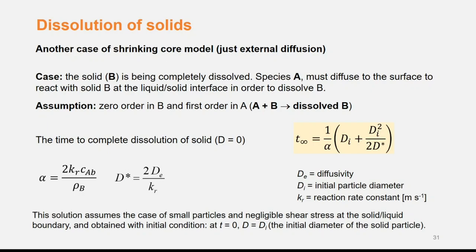This model was derived assuming that there is no shear stress between the particles and the fluid. This will be the case when the particles are small enough that they move easily with the fluid motion, or if the fluid is stagnant — for example, when a tablet is dissolving in the stomach. We will write a material balance resulting in a differential equation for the rate of change of particle diameter with time, with initial condition: at time t = 0, the initial diameter is DI.